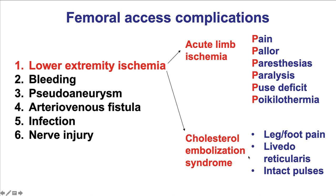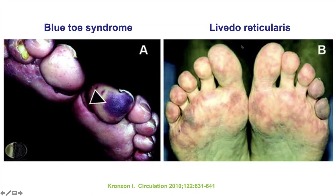As a result, the manifestation of cholesterol embolization is pain in the leg and foot and livedo reticularis, whereas for acute limb ischemia, the classic presentation is with the six Ps: pain, pallor, paresthesias, paralysis, pulse deficit, and poikilothermia. Ideally, the diagnosis of an issue with the major arteries supplying the limb should be made before those symptoms develop, to minimize the risk of irreversible limb injury. These are images of the cholesterol embolization syndrome with livedo reticularis and blue toe syndrome.